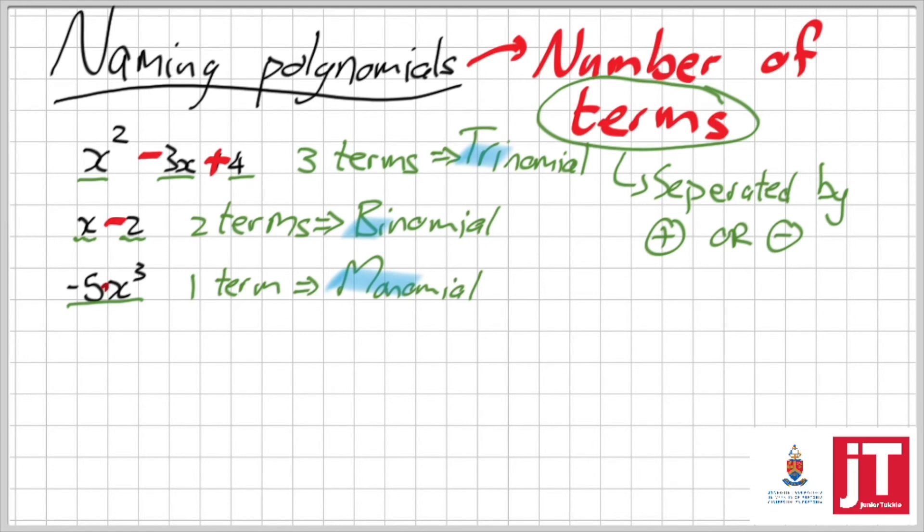But then there are some weird ones. What about these ones? What do you say? Instinctively, you might go and look at the first one and say, there's a plus. So it must be a binomial. But wait.